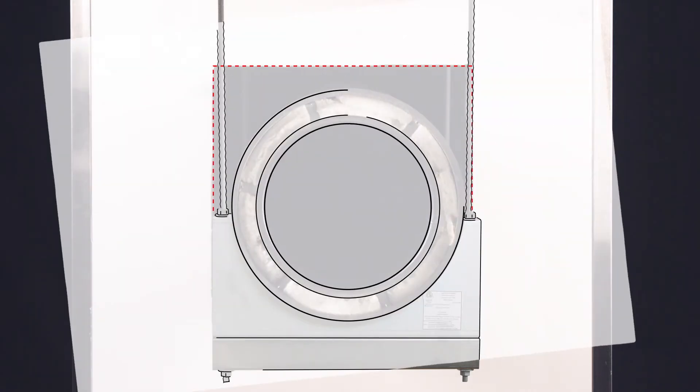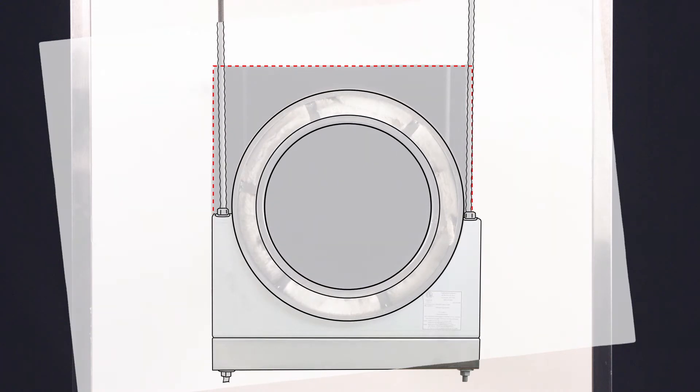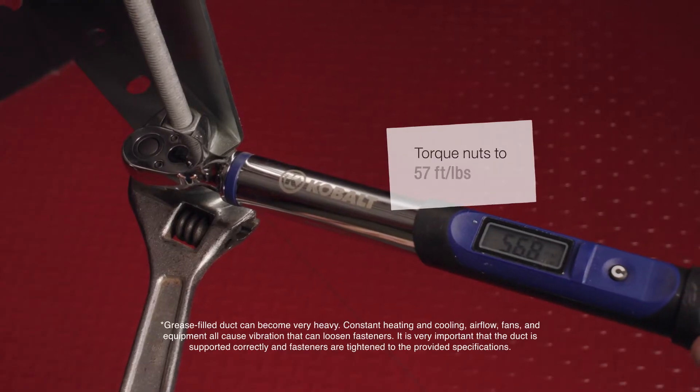Next, lay the duct onto the support and adjust the supports so the duct is centered within the wall opening. Torque all nuts to 57 foot-pounds.